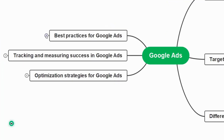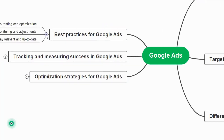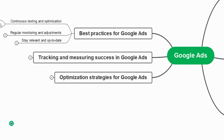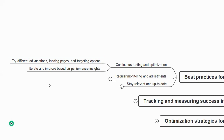Now let us understand the best practices for Google Ads: continuous testing and optimization, regular monitoring and adjustments, and staying relevant and up-to-date. For continuous testing, you can try different ad variations, landing pages, and targeting options. For a single ad, you can experiment with different sets of variations and various targeting options.